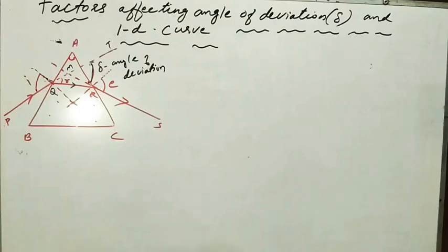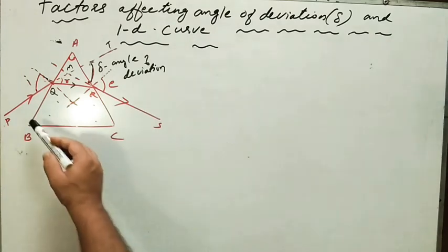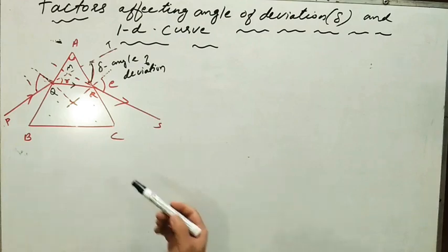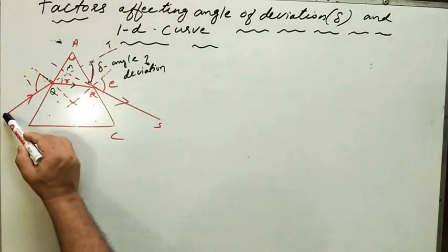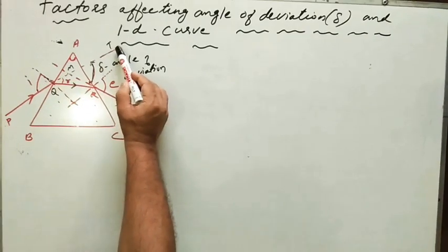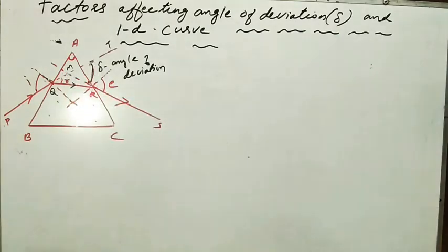Since AB and AC are refracting surfaces inclined to each other, the incident ray PQ and the emergent ray are never parallel, so angle i is not equal to angle e. When refraction takes place through a glass prism, there is a certain angle through which the emergent ray turns from its original path — we call this the angle of deviation, denoted by delta. The angle of deviation is the angle between the incident ray produced forward and the emergent ray produced backward. Angle TMS is known as the angle of deviation. This ray diagram is very important for board examinations — all of you must practice it.